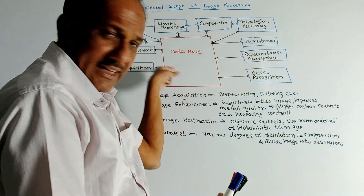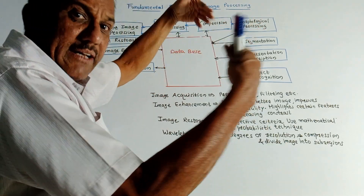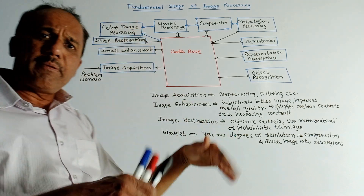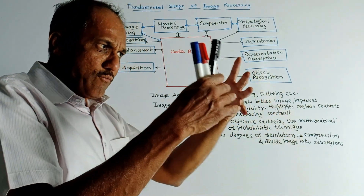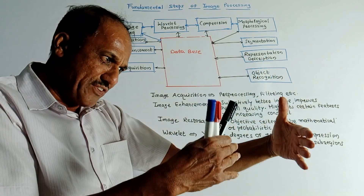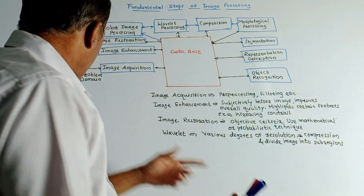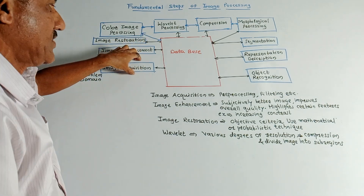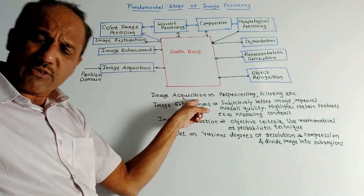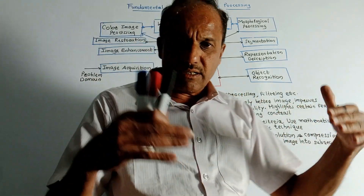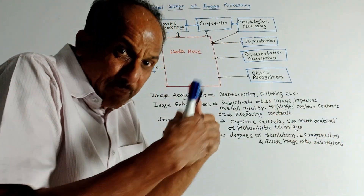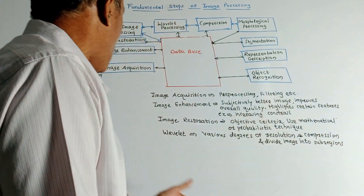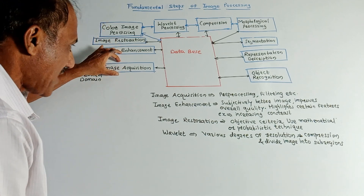The first block is image acquisition. We need to capture an image from the problem domain, so capturing that image is referred to as image acquisition. Image acquisition can also be treated as the block used for pre-processing of the image and for filtering purposes.